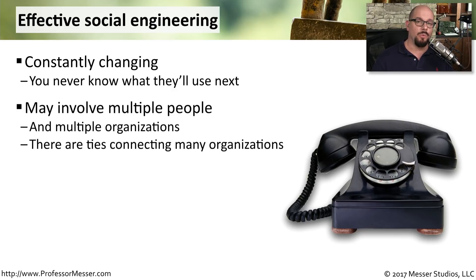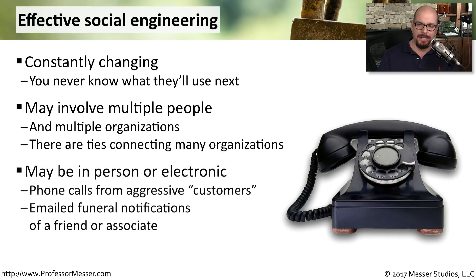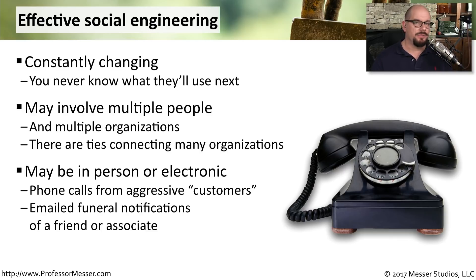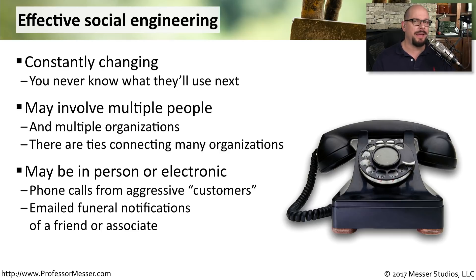Social engineering may involve one person trying to gain access, or it may be multiple people and multiple organizations acting simultaneously. They're all coordinating their efforts and hoping that you'll drop your shield and allow them access to anything that they might need. This might be done in person, over the phone, or it might be somebody who's sending you an email electronically. Sometimes it's somebody who's being very aggressive on the phone and putting you in a very difficult situation. Another example of social engineering you might not be expecting are the bad guys taking advantage of situations like a funeral, sending funeral notifications to people inside of your company. These are ways the bad guys are using to try to gain access without us even realizing that it's happening.